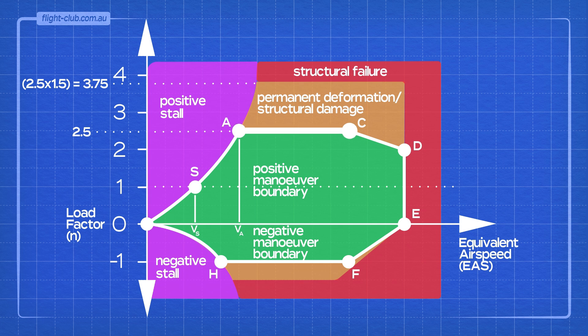The lines AC and HF are the maximum positive and negative load factor limits as per certification specification 23 or 25.